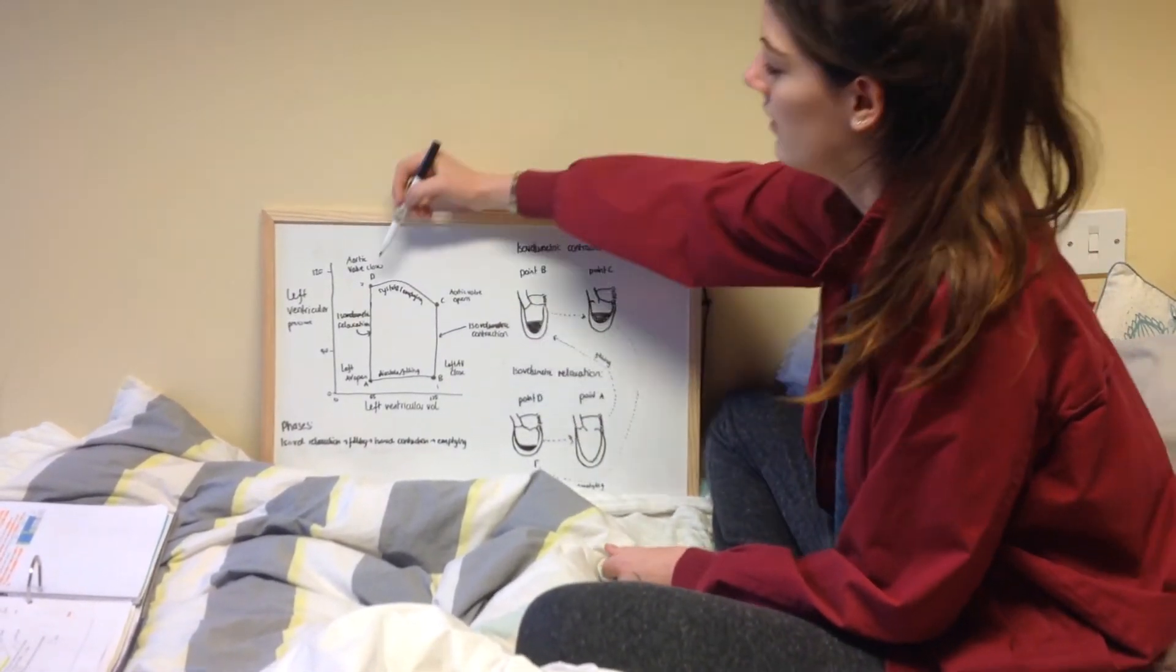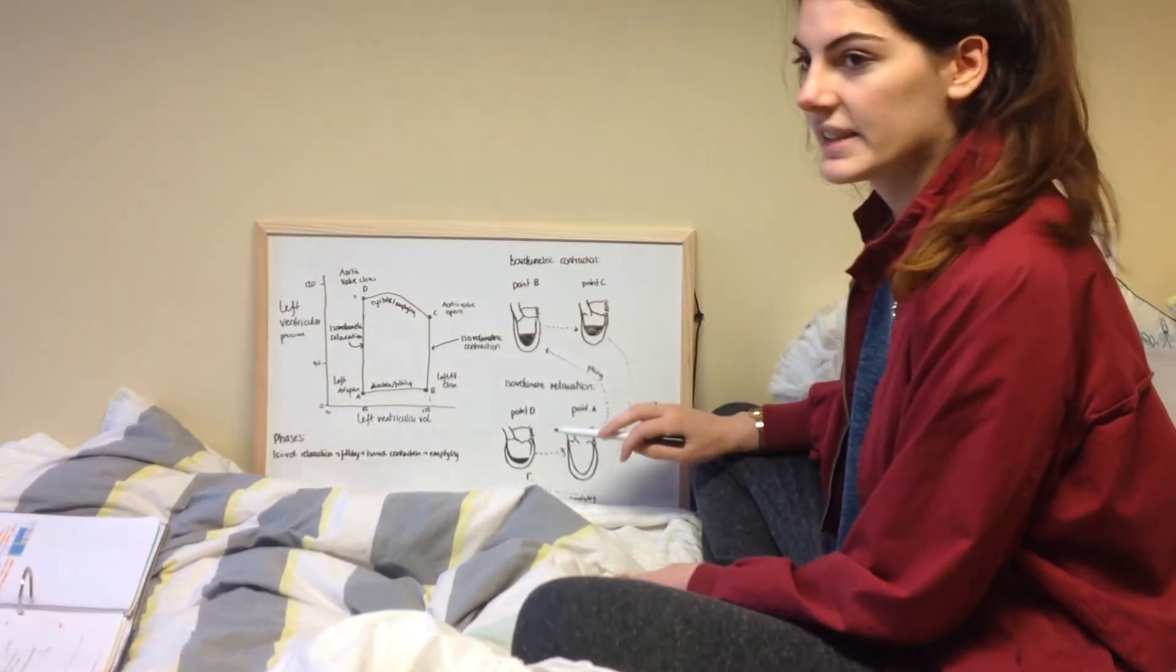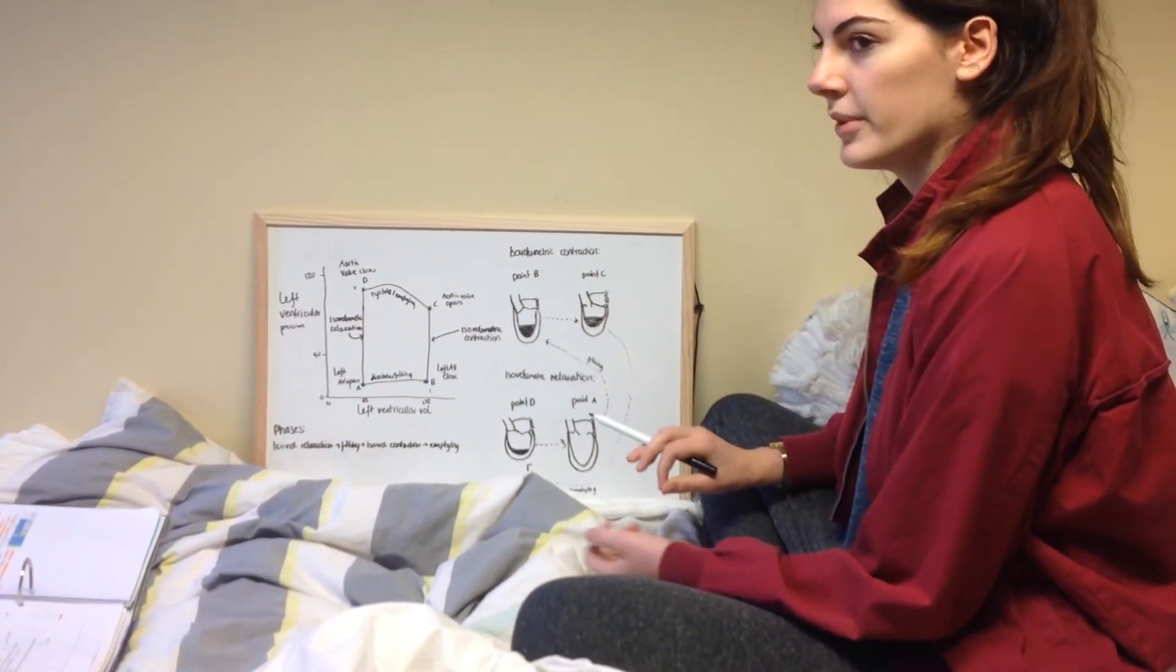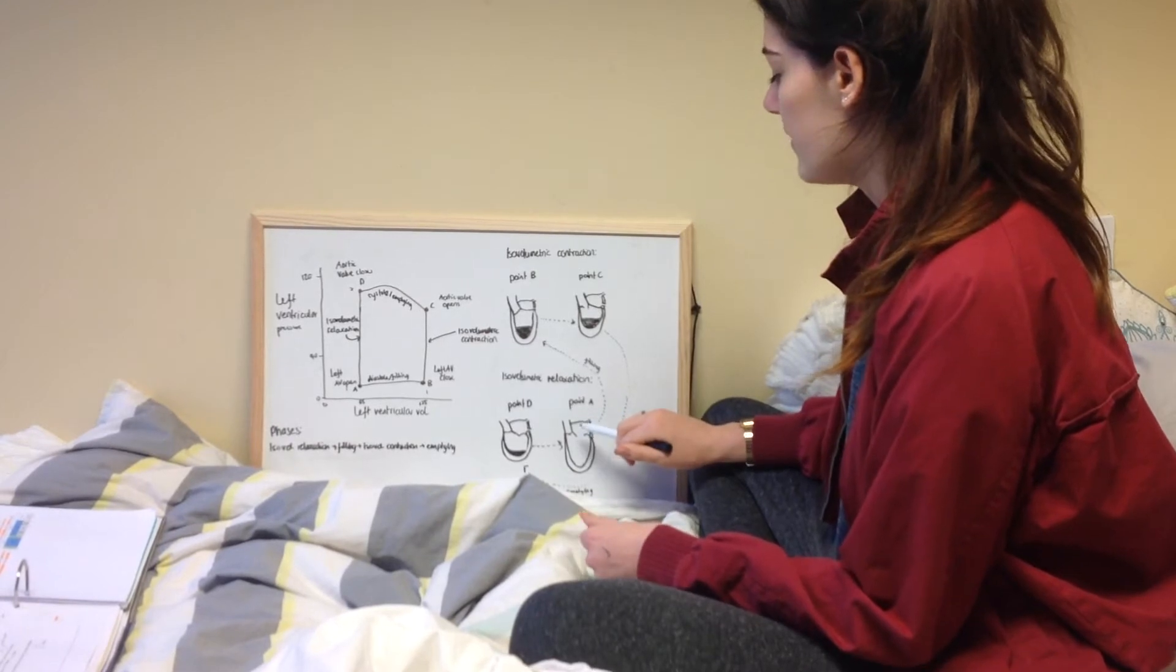From here, the ventricle needs to relax again so the pressure's low, and blood can be drawn in from the atria.